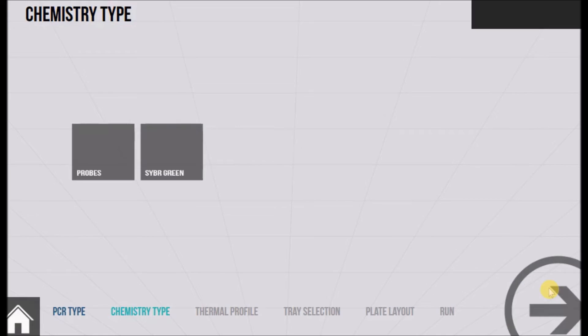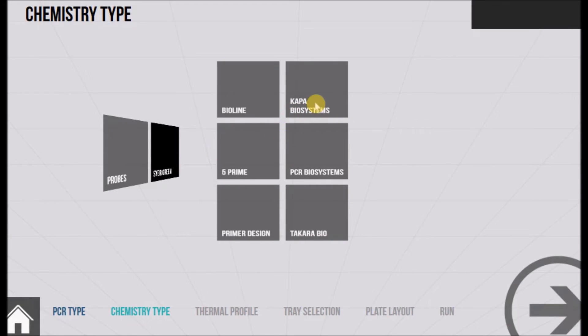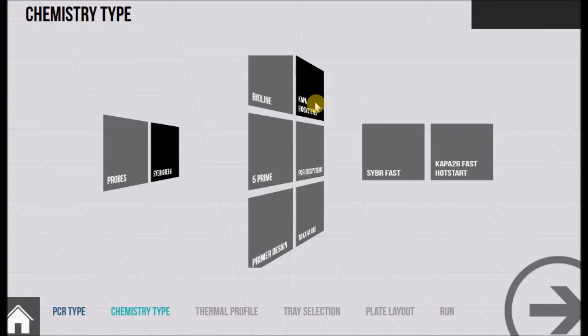On the next page select whether probe or SYBR based chemistry is being used. This brings up a list of some of the kit manufacturers that have been optimized on the Express machine. It's by no means an exhaustive list though. If you wish to use a kit manufacturer that isn't listed, simply choose custom PCR when choosing the PCR type on the previous page. Once you've selected a kit manufacturer it will bring up some of their products. Select one of these and press the next button.